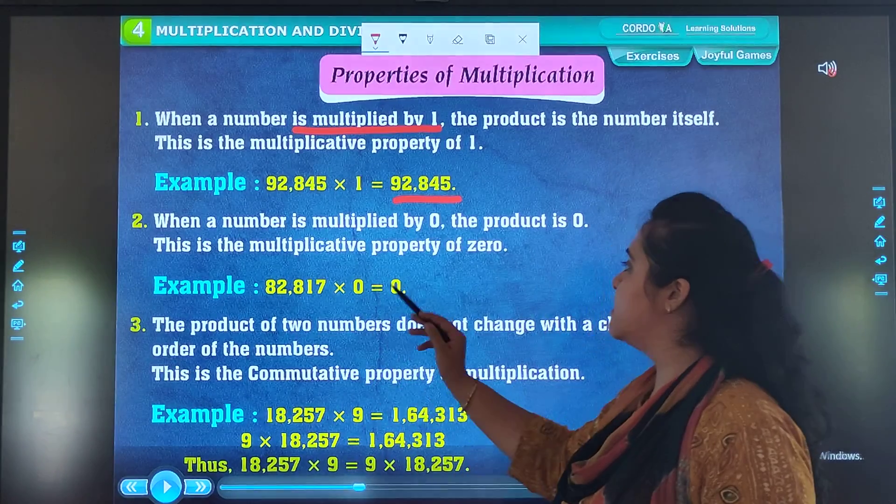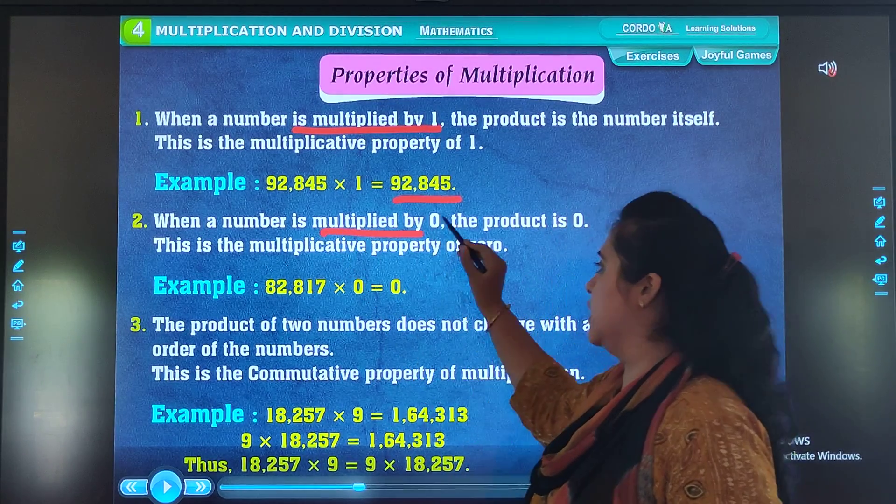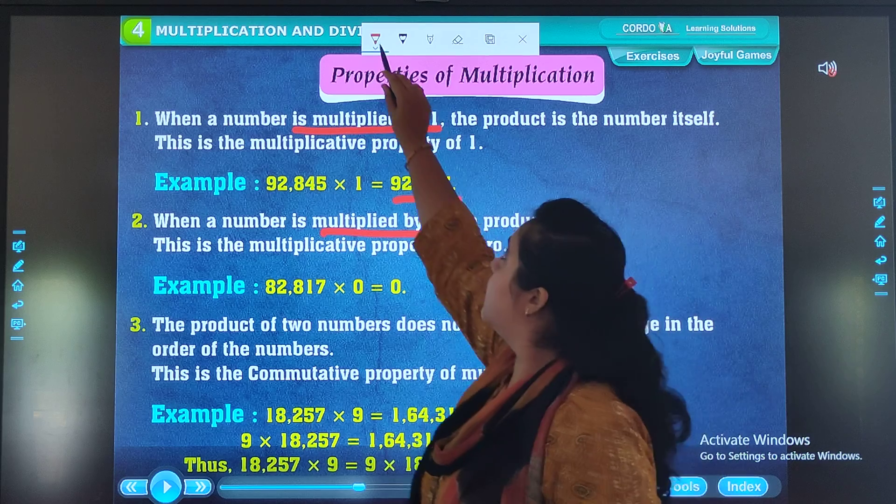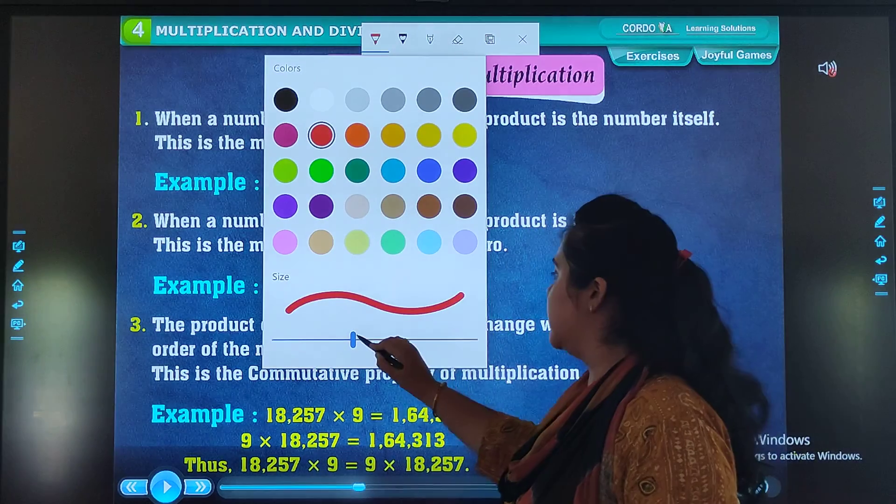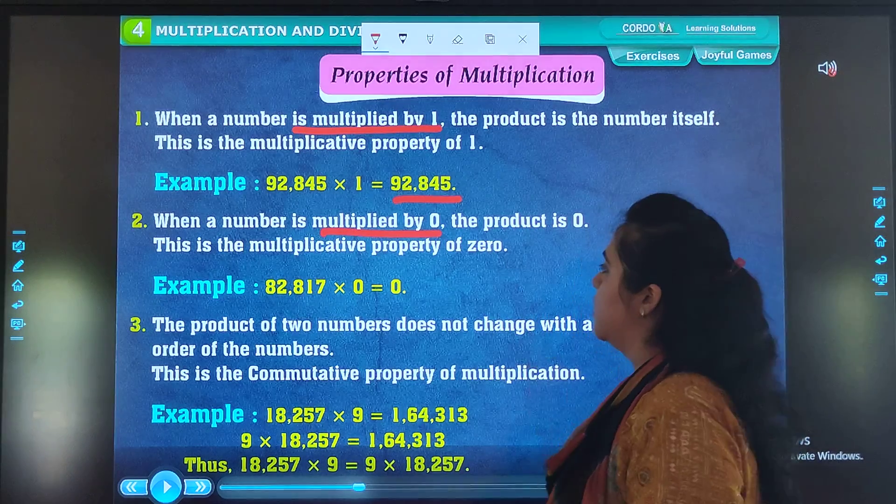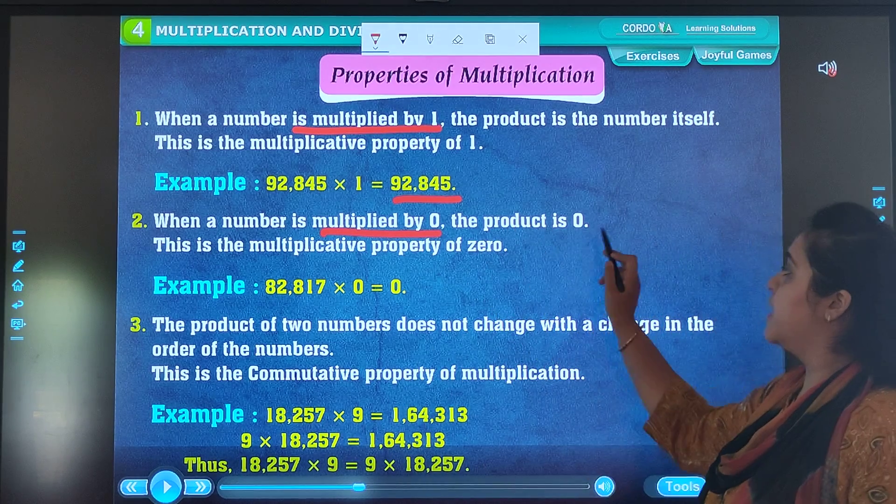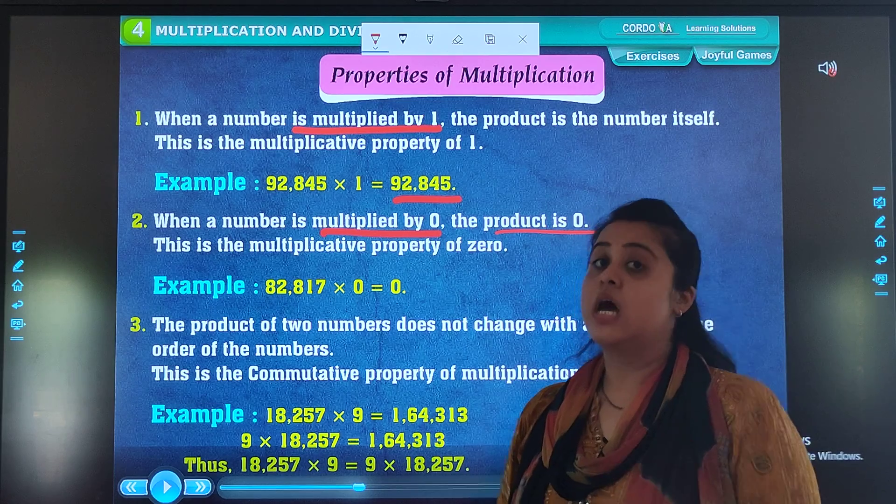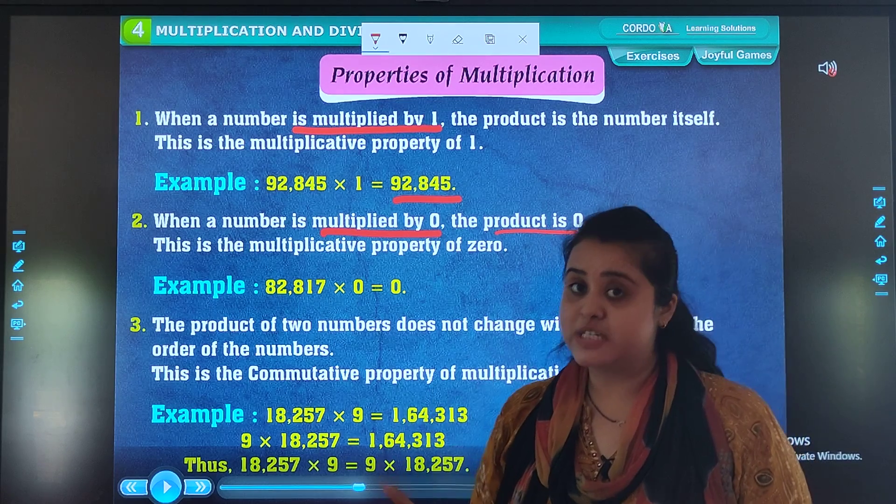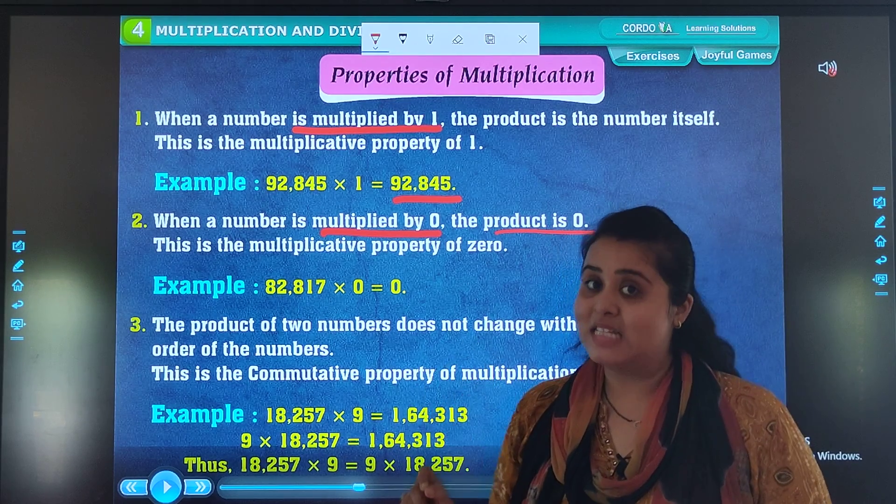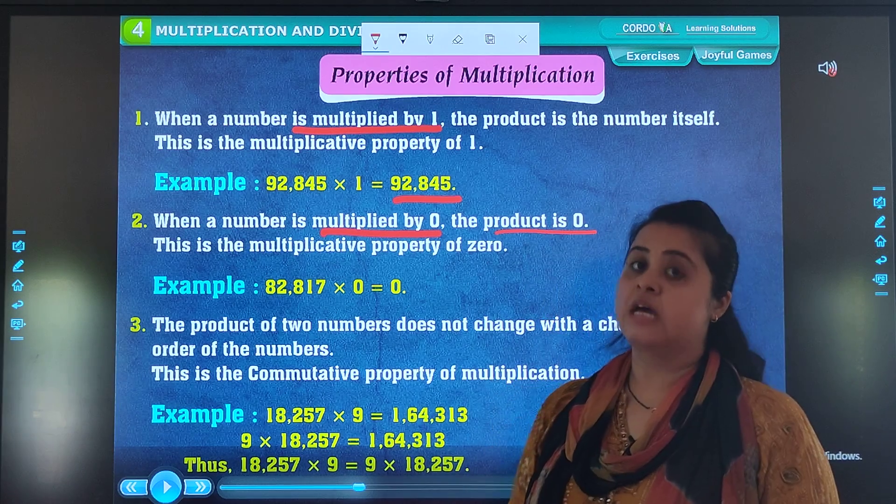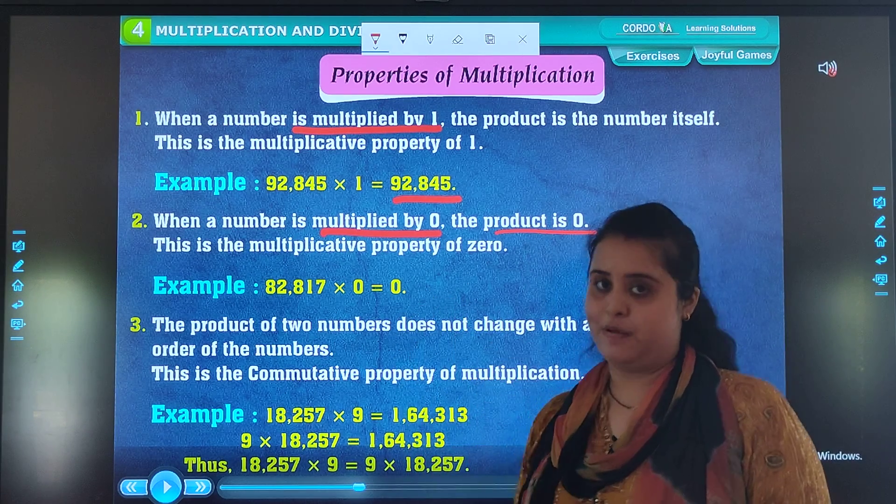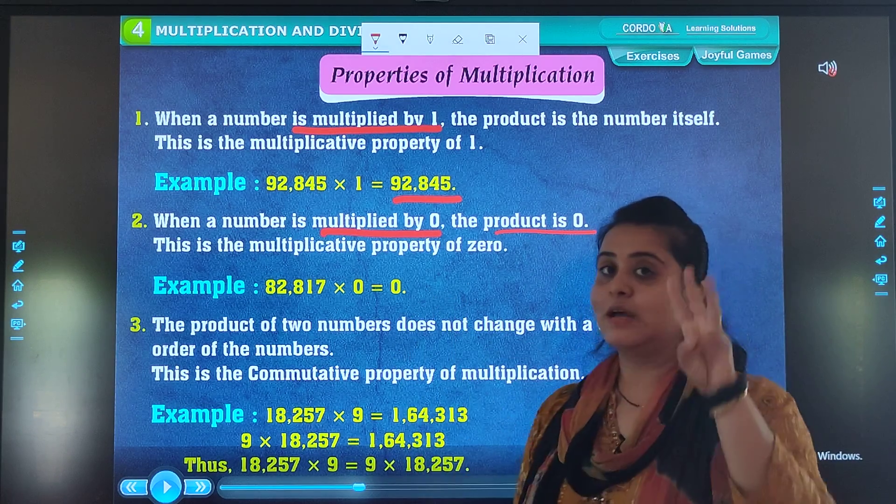When the number is multiplied by 0, the product is 0. The answer will be 0. This is the second part. Let's discuss the third part.